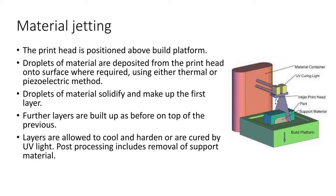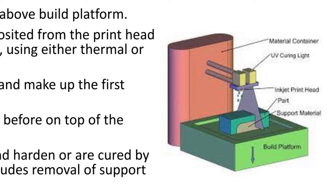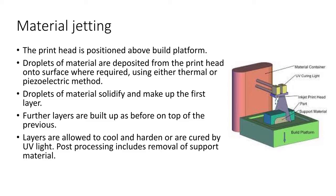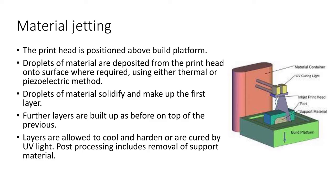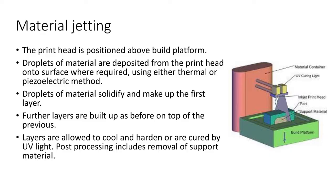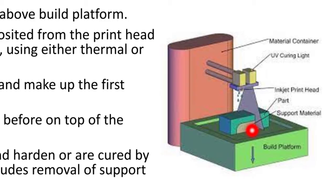Droplets of material solidify and make up the first layer. Further layers are built up on top of the previous, and layers are allowed to cool and harden or are cured by ultraviolet light — the print head includes a UV light source for this purpose. Post-processing includes the removal of support material. This is all about material jetting.